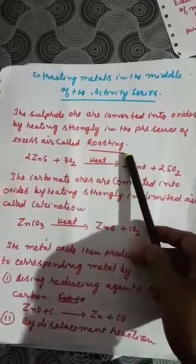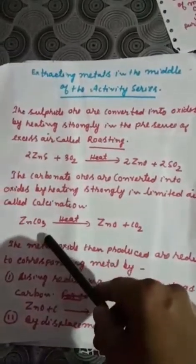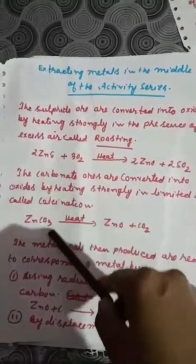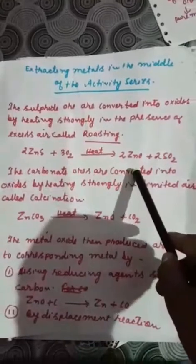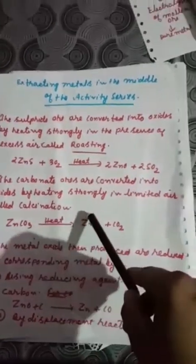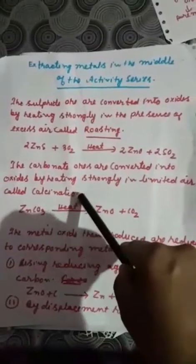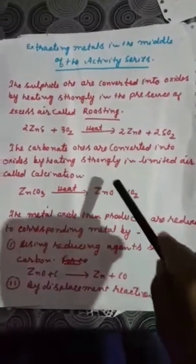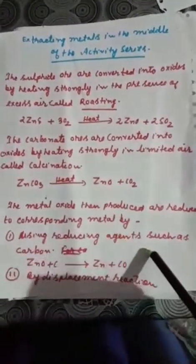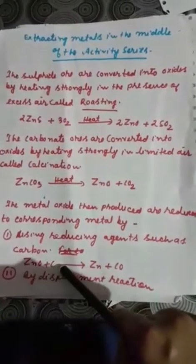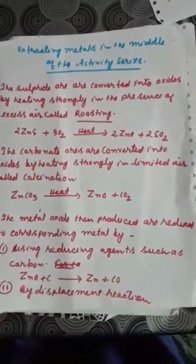Metals in the middle of the reactivity series — like zinc and iron — are mainly found in sulphide and carbonate forms. When a sulphide ore is heated strongly in excess air to get the oxide, this is called roasting. When a carbonate ore is heated strongly in limited air, this is called calcination. Both processes give us the oxide of the metal. After getting the oxide, we reduce it using a reducing agent like carbon: ZnO + C gives Zn + CO.